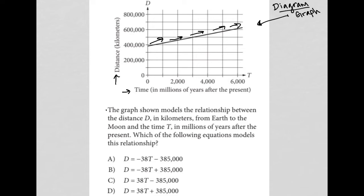So let's look at the actual question. The graph shown models the relationship between the distance d in kilometers from Earth to the moon and the time t in millions of years after the present. Okay, so this represents the present. Zero time is the present. Which of the following equations models this relationship? All right, so in essence, we're looking for an equation that models this line.